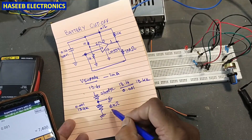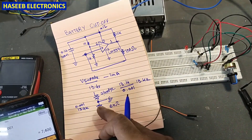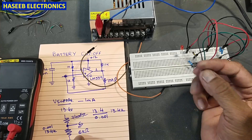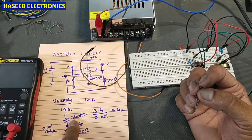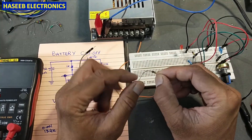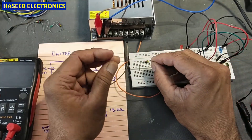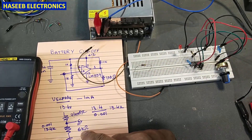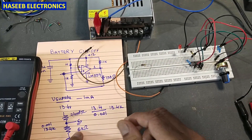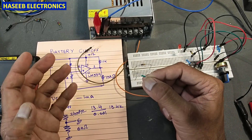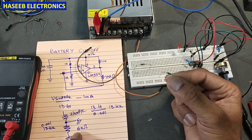We need two resistors: 7.4kΩ and 6kΩ. If you cannot find the exact values, select the next closer available resistor. For example, for 7.4kΩ we might find 8.8kΩ or 8.6kΩ; we need to reconsider and recalculate. For 6kΩ, we might find 5.6kΩ, 5.4kΩ, or 4.7kΩ.